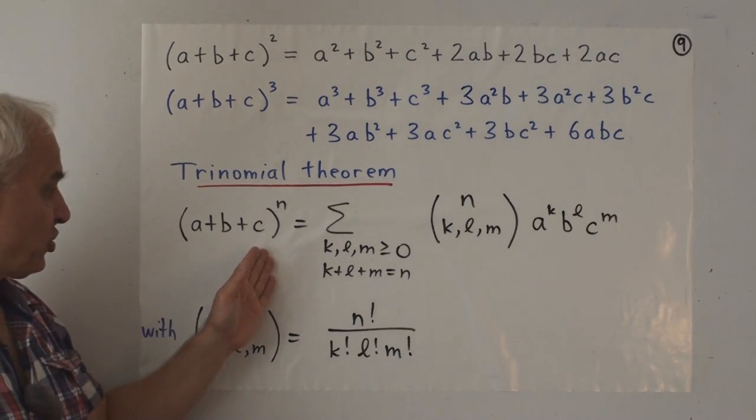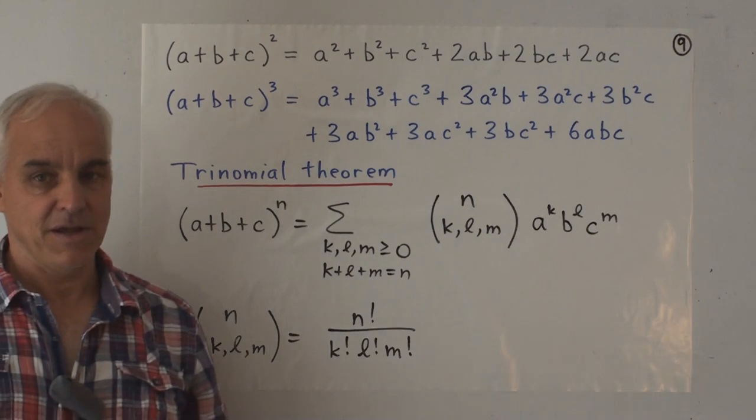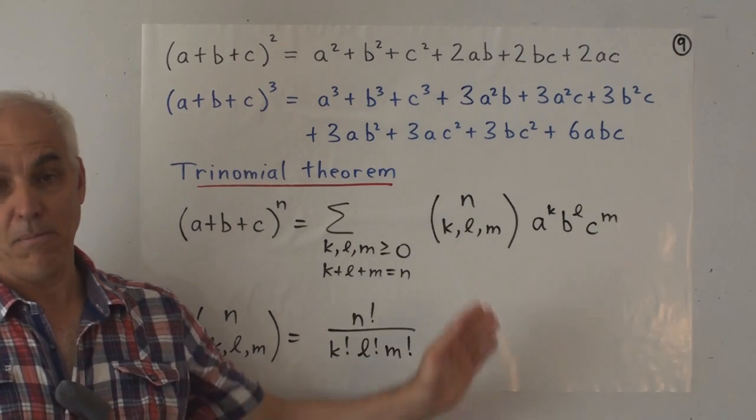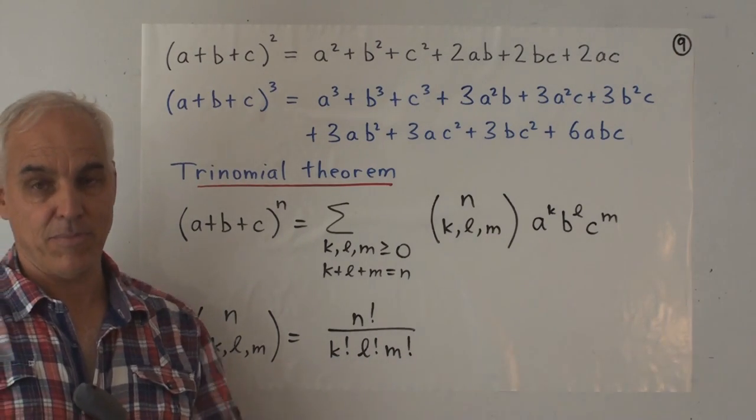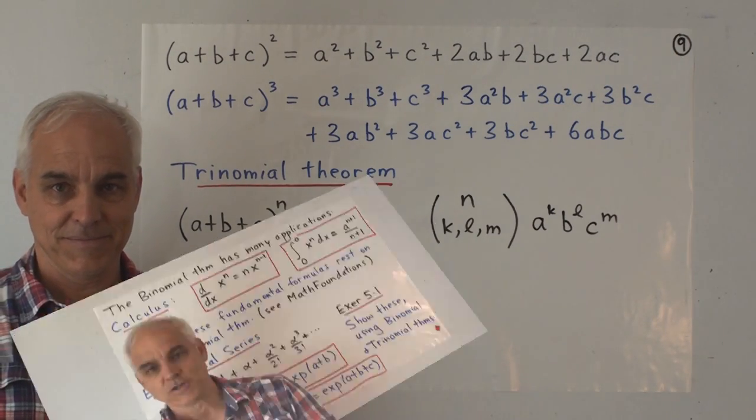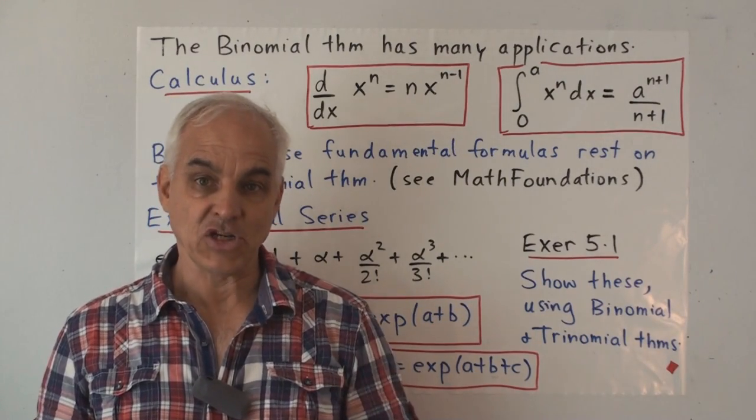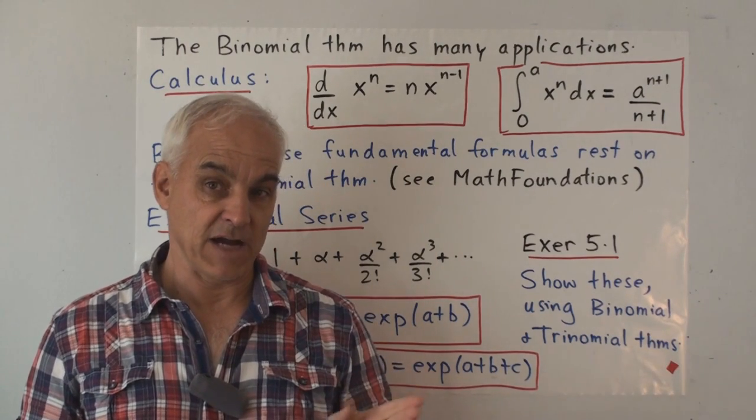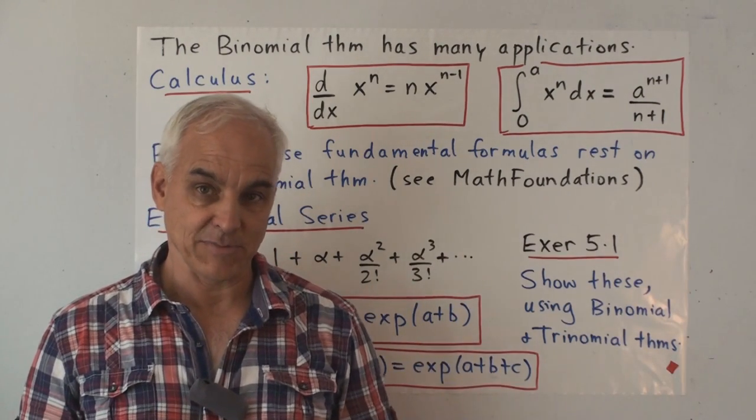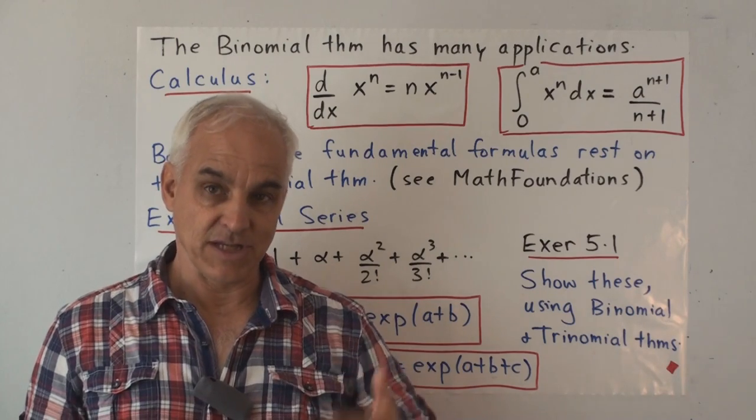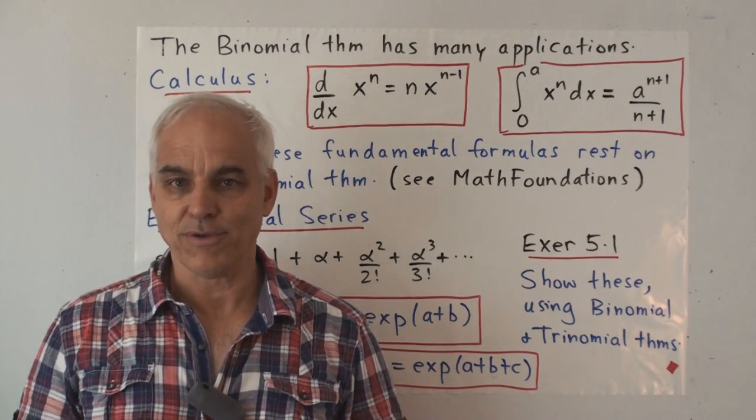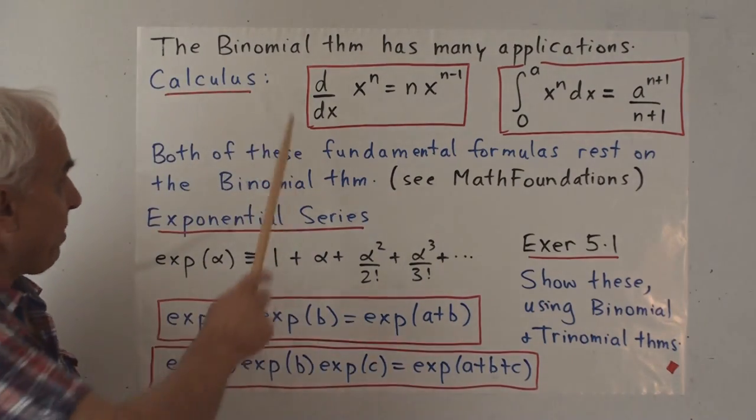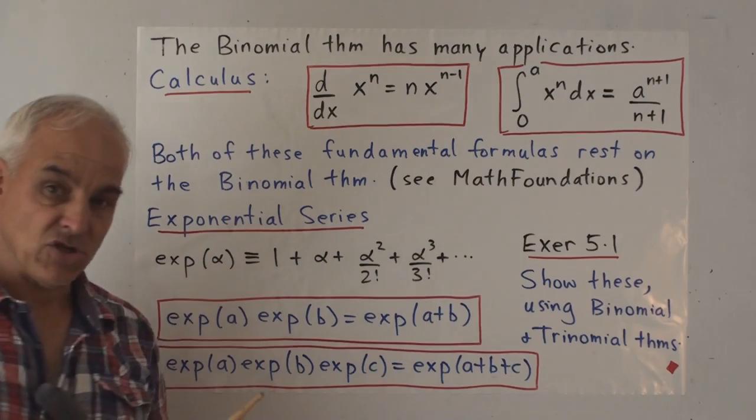Of course the extension to having four terms in here is not much difference once you have written it this way. It's pretty obvious what the multinomial theorem should be. So if you're interested in the binomial theorem and various extensions, one reference is to the Math Foundations 54 and 55 that I wrote down in one of the previous slides. So these are videos in the Math Foundations series where I talk about binomial coefficients and the binomial theorem and various extensions of it.